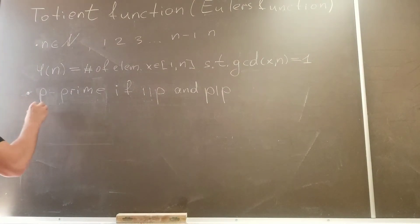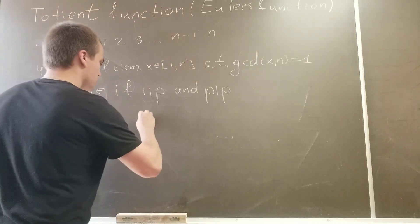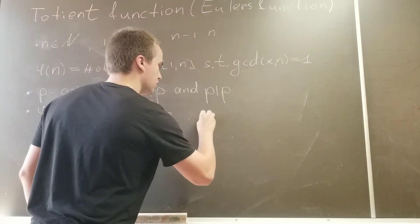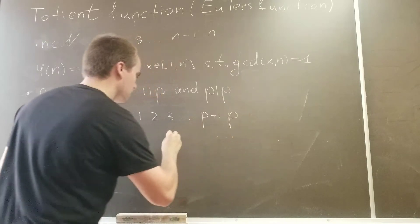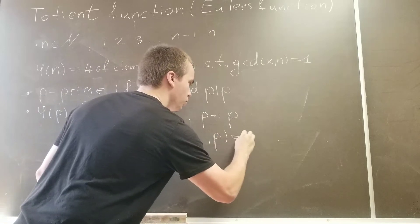So what we want to do is calculate what is our phi of p. And how we're going to calculate phi of p? Let's just write our interval. So we want to answer how many numbers between 1 and p have gcd with p equals to 1.